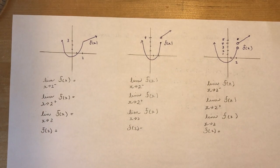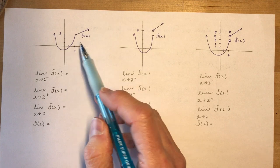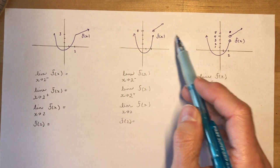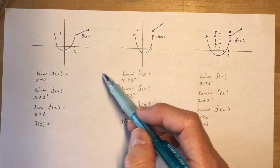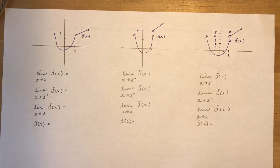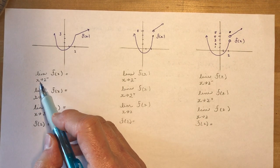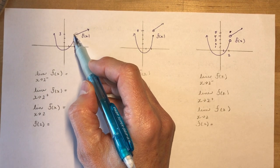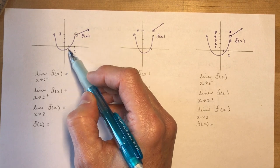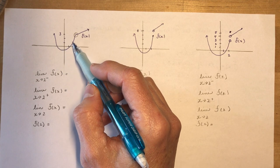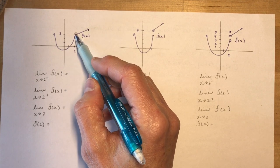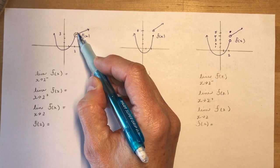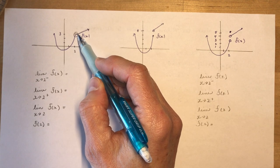Looking at this handout, we have a function f(x) with three different variations, and we're going to talk about whether it is continuous or discontinuous at certain points. We'll do that by looking at the limit as x approaches 2. This was probably a piecewise function with a parabola shifted down joined by a line function at x equals 2, and you want to know what's happening right at the point where the two parts join.